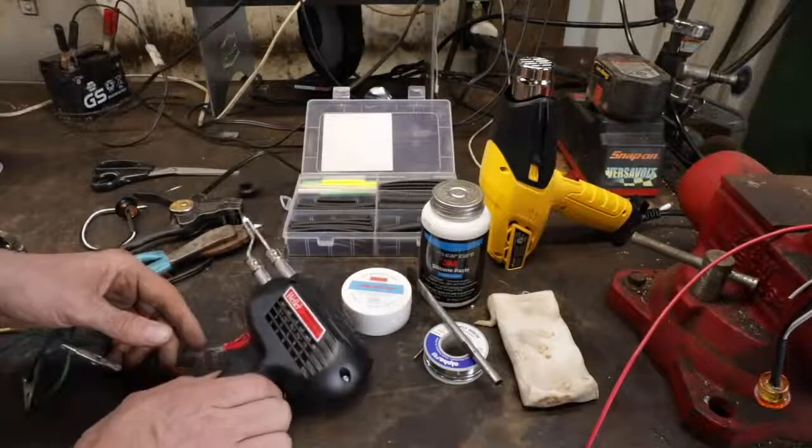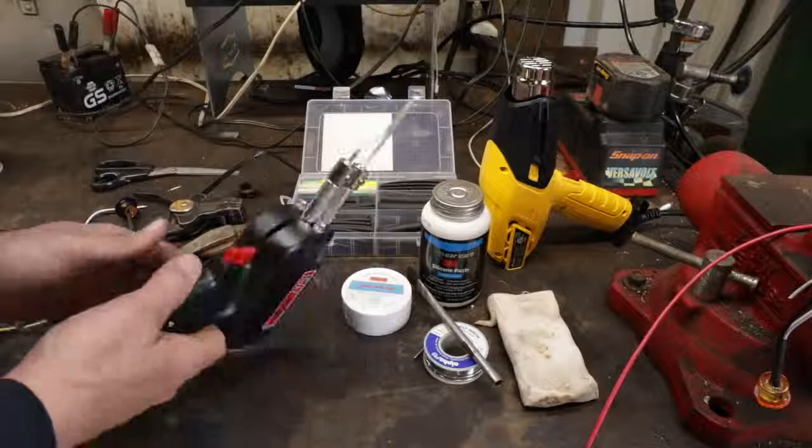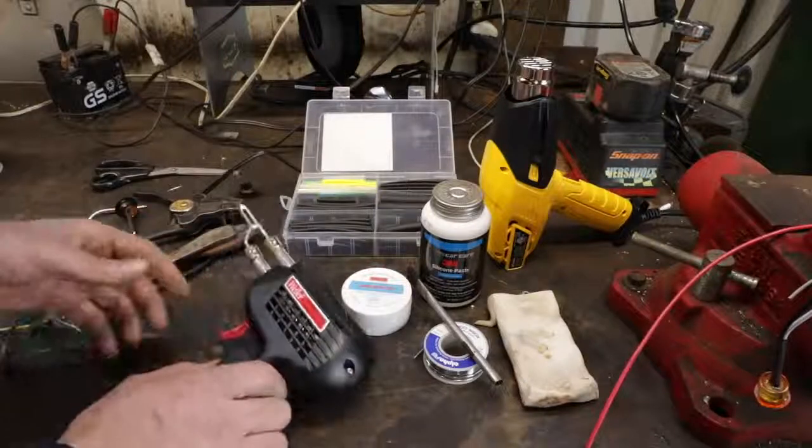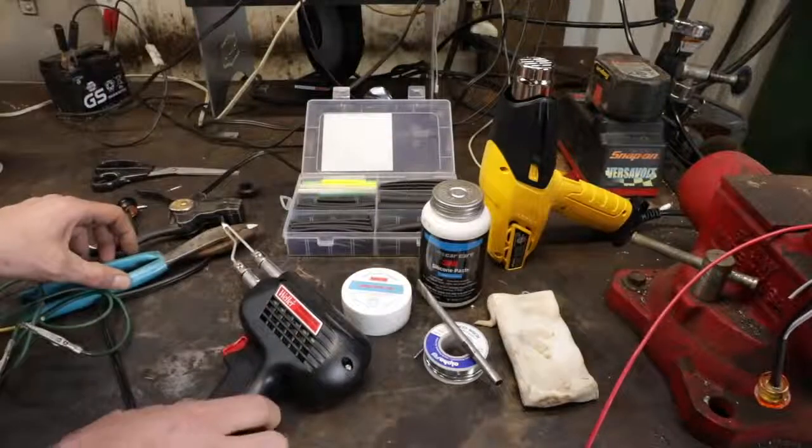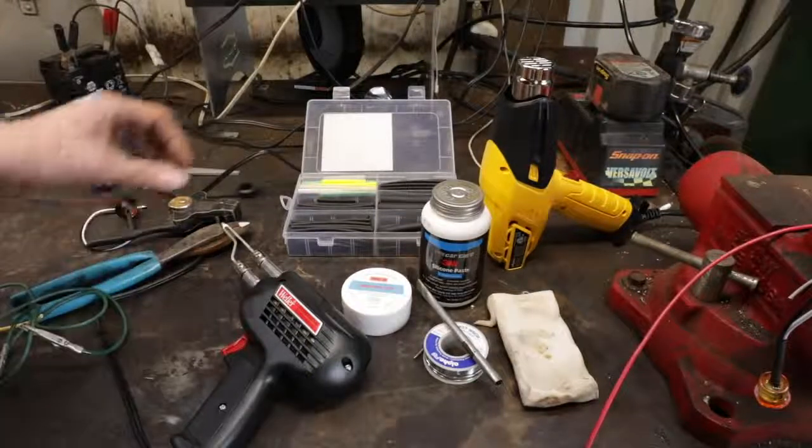So just get yourself a soldering gun. You don't have to get anything fancy. Just these Wellers are good. They're probably in the $30, $40 range. Not very much.